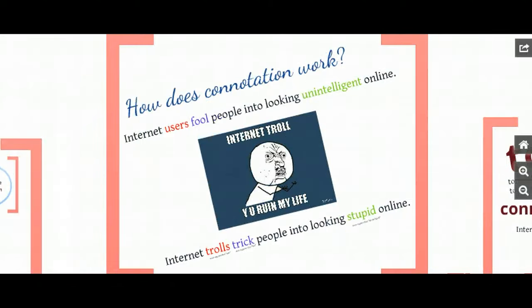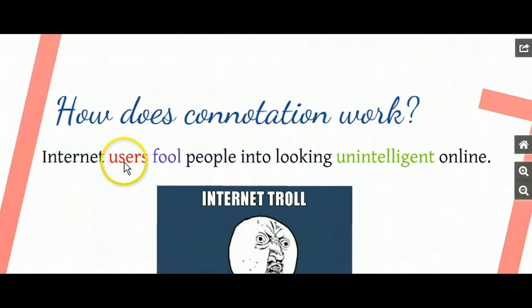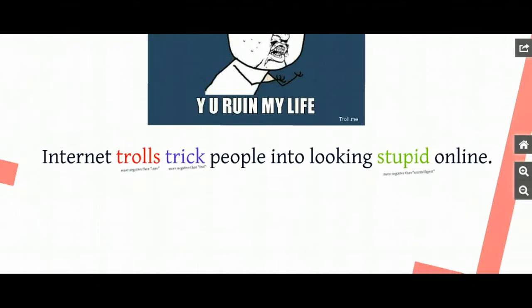So let's see how this works in something larger, like a sentence. Let's look at these two sentences and notice that the words in color mean basically the same things — by definition they're saying the same thing — but they have very different feelings associated with them and create a very different overall impression. The first: 'Internet users fool people into looking unintelligent online.' Compare that to: 'Internet trolls trick people into looking stupid online.'